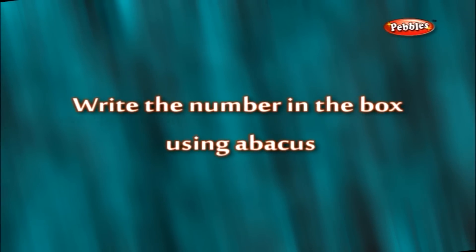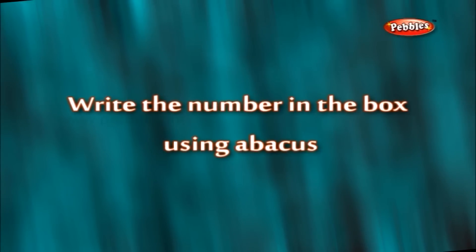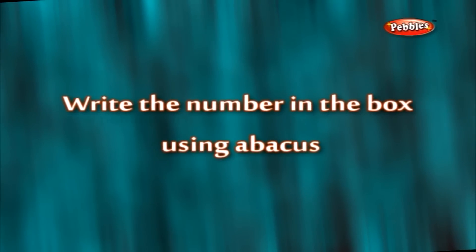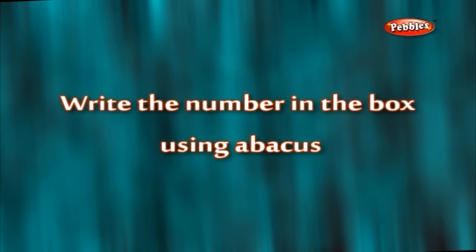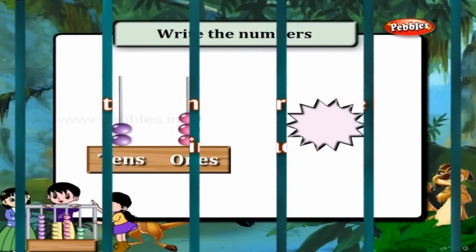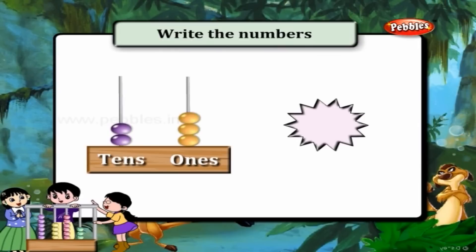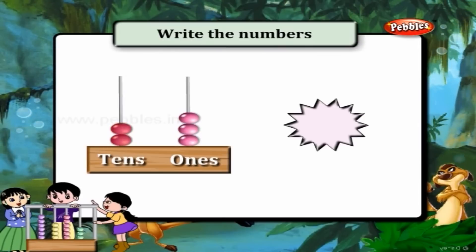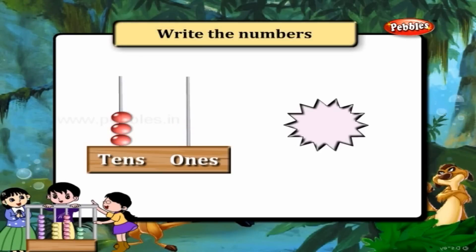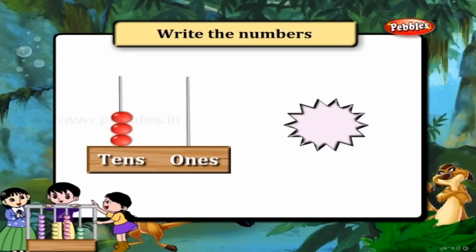Write the number in the box using abacus. 3 ones and 2 tens — that is 23. 0 ones and 3 tens — that is 30.